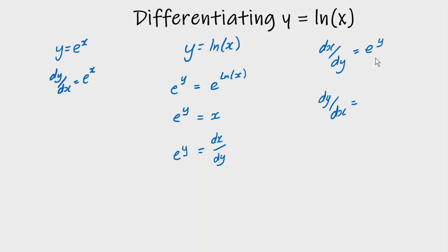Finding the reciprocal, and we know from here that e to the y is x. Therefore dy/dx equals one over x. So that is the derivative of ln(x). The derivative of the natural log of x is one over x.